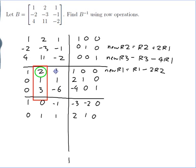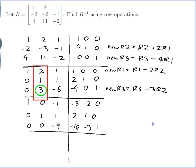I also want a 0 here. My new row 3 is row 3 take 3 of row 2. So: 0 take 3×0 is 0; 3 take 3×1 is 0; minus 6 take 3×1 is minus 9; minus 4 take 3×2 is minus 10; 0 take 3×1 is minus 3; 1 take 3×0 is 1. Now I've got the second column of the identity.